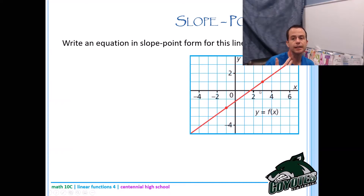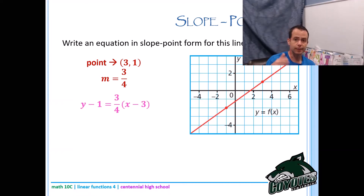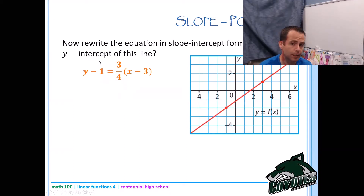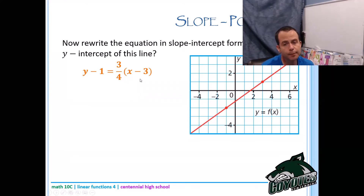Now write an equation in slope point form for this line. The slope is 3 over 4 and the point I'll use is 3 comma 1. Plugging into y minus y1 equals m times x minus x1 gives the slope point form equation. Note this formula will be on your formula sheet, though it won't be labeled as slope point form. Now let's also rewrite it in y equals mx plus b form.